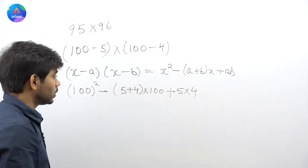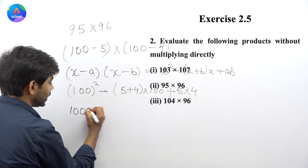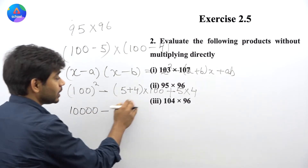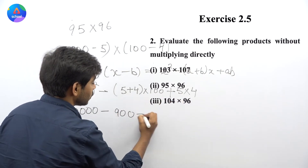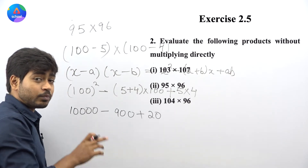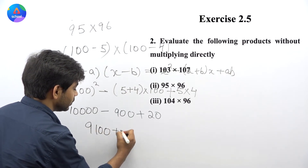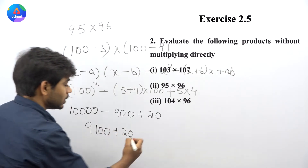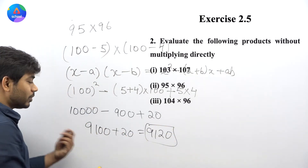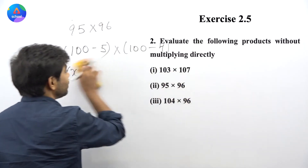तो यह हो जाएगा: 10,000 − 900 + 20। 10,000 में से 900 को minus करना — कितना बचेगा? 9,100 + 20 = 9,120। यह आपका answer है। अब अगले part की तरफ चलते हैं।